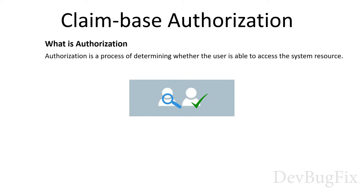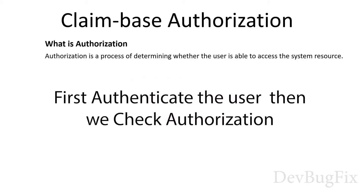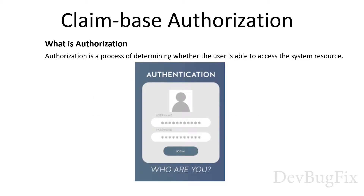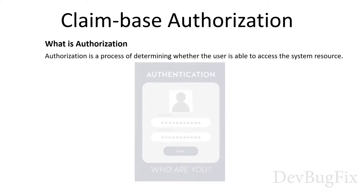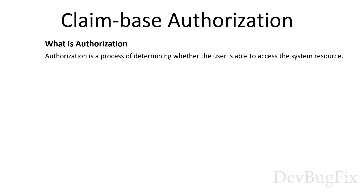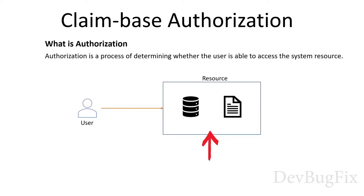What is authorization? Authorization is a process of determining whether the user is able to access the system resource. Authorization comes after authentication. In authentication, we verify the user by username or email and password. Then the authorization process starts. For example, we have a resource that can be a file or database and one user tries to access it. In the authorization process, we check whether the user can access this file or database. If the user has permission, then we allow access; otherwise, we do not allow.